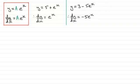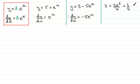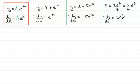Now it doesn't always have to be a function of x. For instance we could have s as our variable, where s equals 3e to the power t all over 4. When you get something like this — a fraction — we can think of the constant as 3 quarters being multiplied by e to the power t. So differentiating gives ds/dt equals 3 quarters multiplied by the differential of e to the t, which is e to the t. So you get 3 quarters e to the t, or 3e to the power t all over 4.